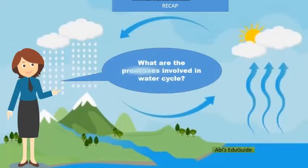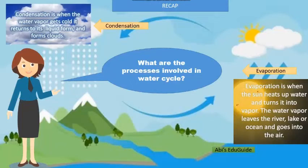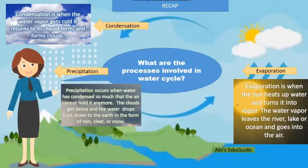Let's recap. What are the processes involved in the water cycle? Evaporation is when the sun heats water and turns it into vapor; the water vapor leaves the rivers, lakes, or ocean and goes into the air. Condensation is when the water vapor gets cold, it turns to its liquid form and forms clouds. Precipitation occurs when water has condensed so much that the air cannot hold it anymore — the clouds get dense and water drops back down to the earth in the form of rain, sleet, or snow.